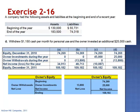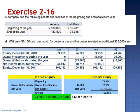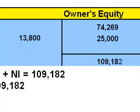Setting this up as an equation: $74,269 plus $25,000 minus $13,800 plus net income equals $109,182. Combining those values gives $85,469 plus net income equals $109,182. Subtracting $85,469 from each side gives net income of $23,713. The company did not have a net loss — instead it realized net income of $23,713.